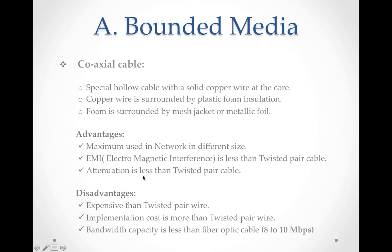Next is attenuation — it is also less here if we compare with twisted pair cable. Why is attenuation less? Because EMI is less here, our signal becomes weak less quickly, and therefore attenuation is also less.